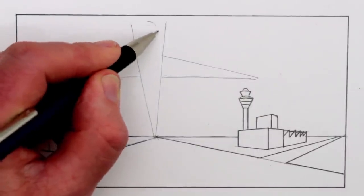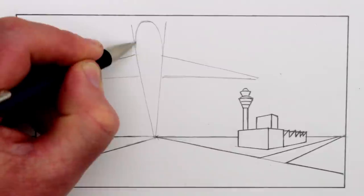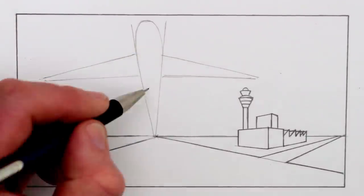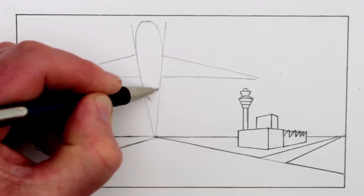Next we can draw a curve for the front of the plane and now draw a point for the far end of the plane, the furthest part away from us.